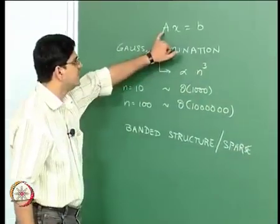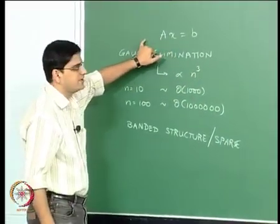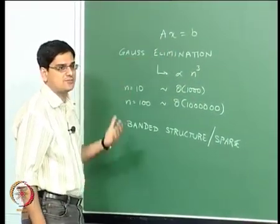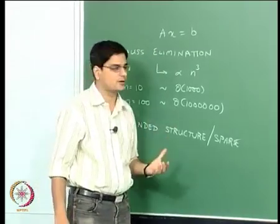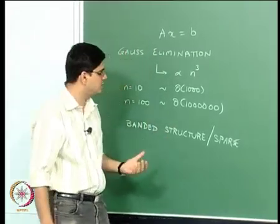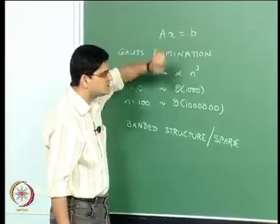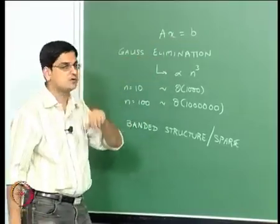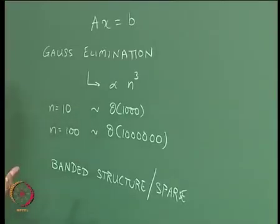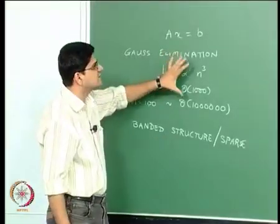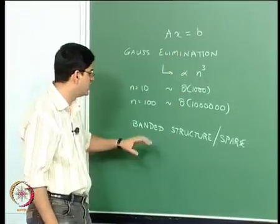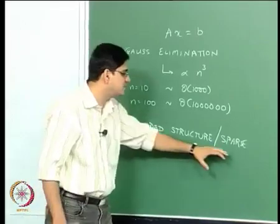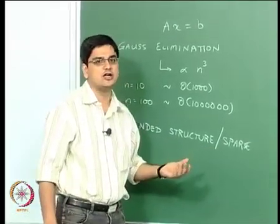This matrix A is not a full matrix but has a certain type of structure. Because it has a certain structure, there are certain properties that we can exploit, and that is exploited in some of the more efficient ways of solving — those are banded solvers, as they are called.